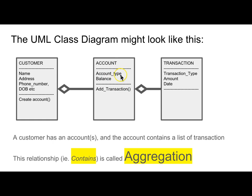I'd also recommend that at an account level, you store the account type and the balance, and a method to add in transactions. At the transaction level, in the transaction class, you have the type of transaction, whether it's a credit or a debit, the amount of money that's involved, and the date that happens. This relationship is called aggregation. It's generally carried out with an array list of, for example, of type account as an instance level variable of the customer class. So a customer would contain an array list of accounts, and an account would contain an array list of transactions.